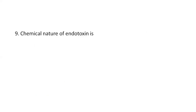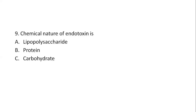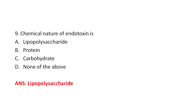Next question: The chemical nature of endotoxin is? Option A, lipopolysaccharide. Option B, protein. Option C, carbohydrate. Option D, none of the above. The right answer is Option A, lipopolysaccharide. The chemical nature of exotoxin is protein. Endotoxins form an integral part of the cell wall of gram-negative bacteria and are released by natural lysis or disintegration of the cell wall. Exotoxins directly diffuse into the surrounding medium.